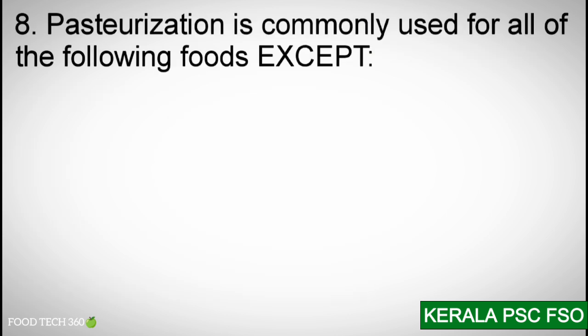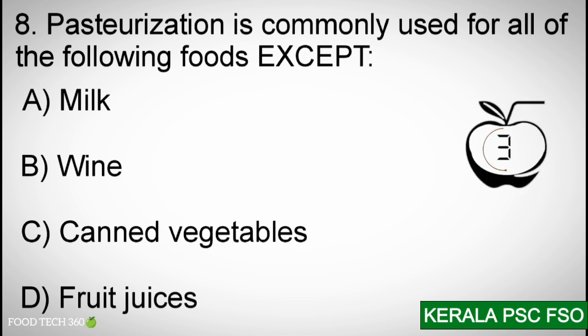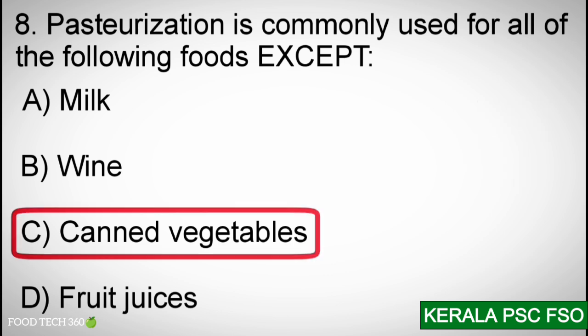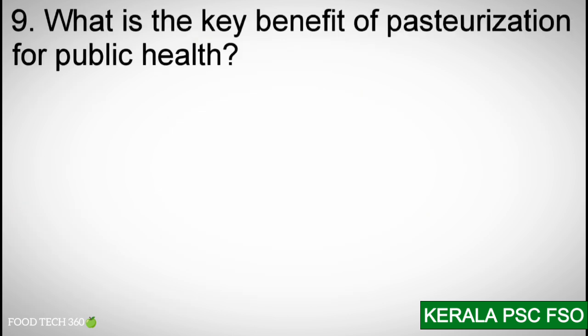Question number eight: Pasteurization is commonly used for all of the following foods except — Options: A) Milk. B) Wine. C) Canned vegetables. D) Fruit juice. Correct answer: C) Canned vegetables.